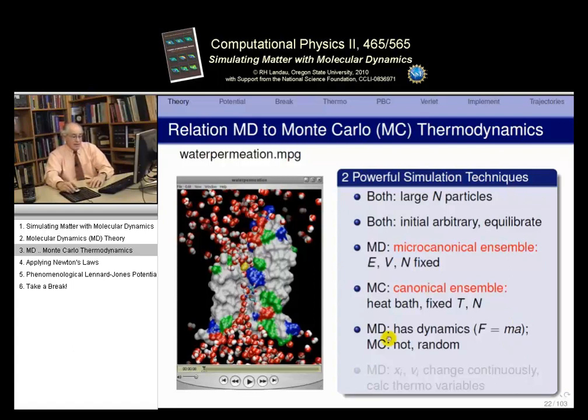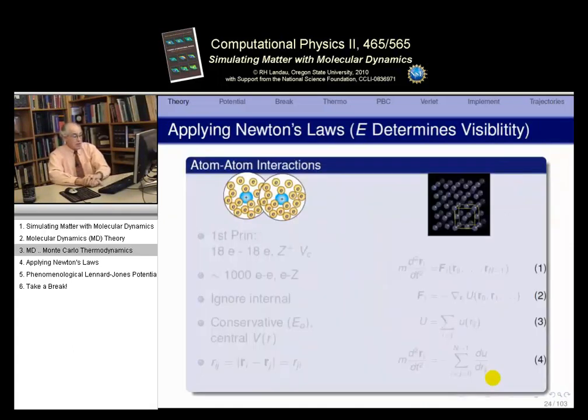In an accounting sense, molecular dynamics is the microcanonical ensemble. Microcanonical meaning the energy is fixed, the total energy of the system, the volume of the system, and the number of particles is fixed. When we did Metropolis algorithm for the icing model, Monte Carlo technique used a canonical ensemble. We had a heat bath which kept the system at constant temperature. MD has dynamics built in. That's why it's called dynamics. It's just F equals MA. It's just Newton's laws, but it's right. Generally, Monte Carlo has no dynamics. We replace the dynamics in Monte Carlo by using random numbers.